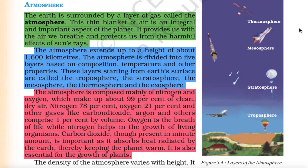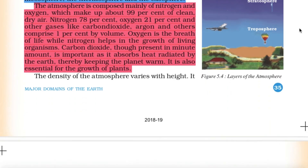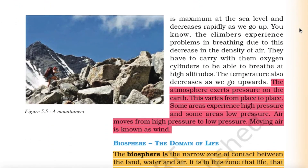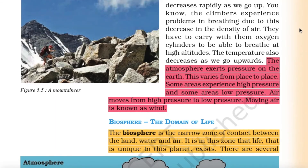Oxygen is the breath of life, while nitrogen helps in the growth of living organisms. Carbon dioxide, though present in minute amounts, is important as it absorbs heat radiated by the earth, thereby keeping the planet warm, and is also essential for the growth of plants. The density of the atmosphere is maximum at sea level and decreases rapidly as we go up — climbers experience breathing problems due to this decrease in air density.